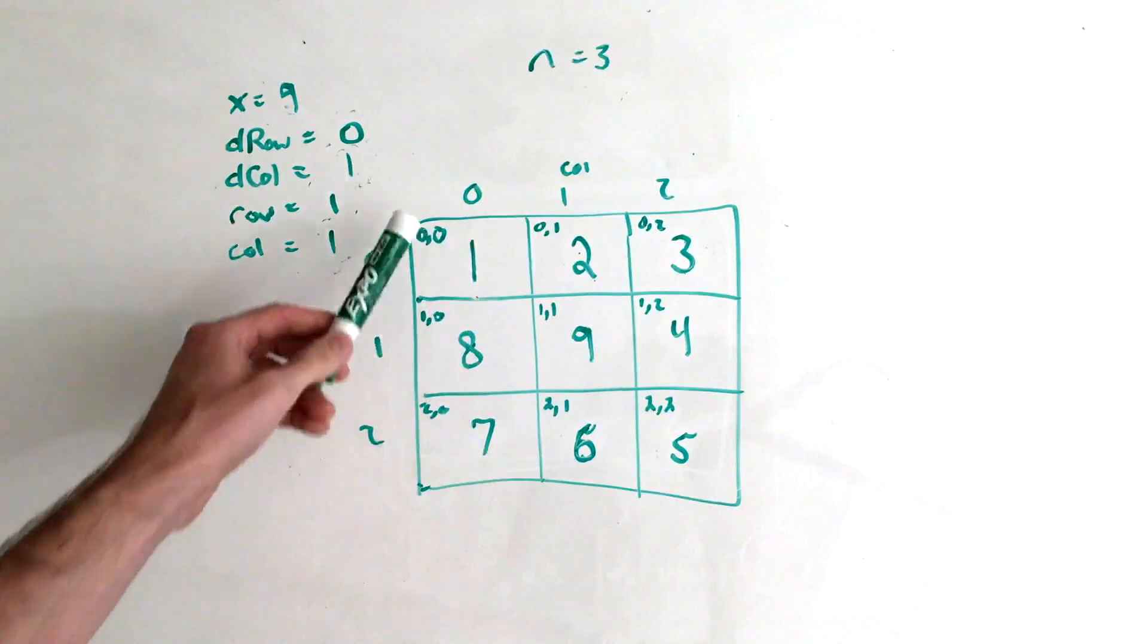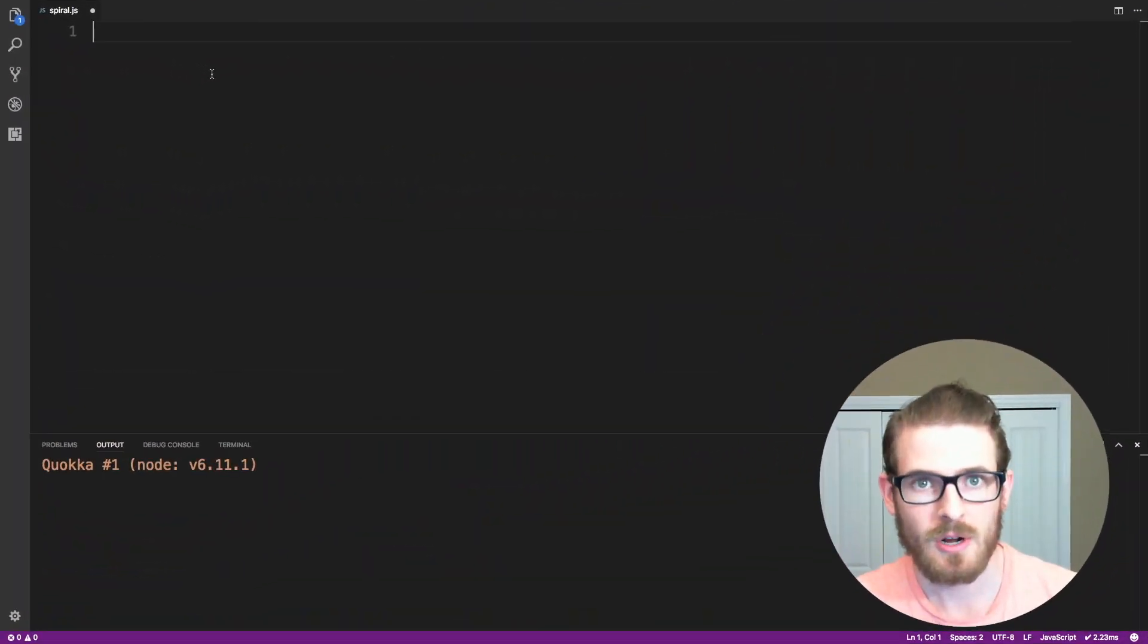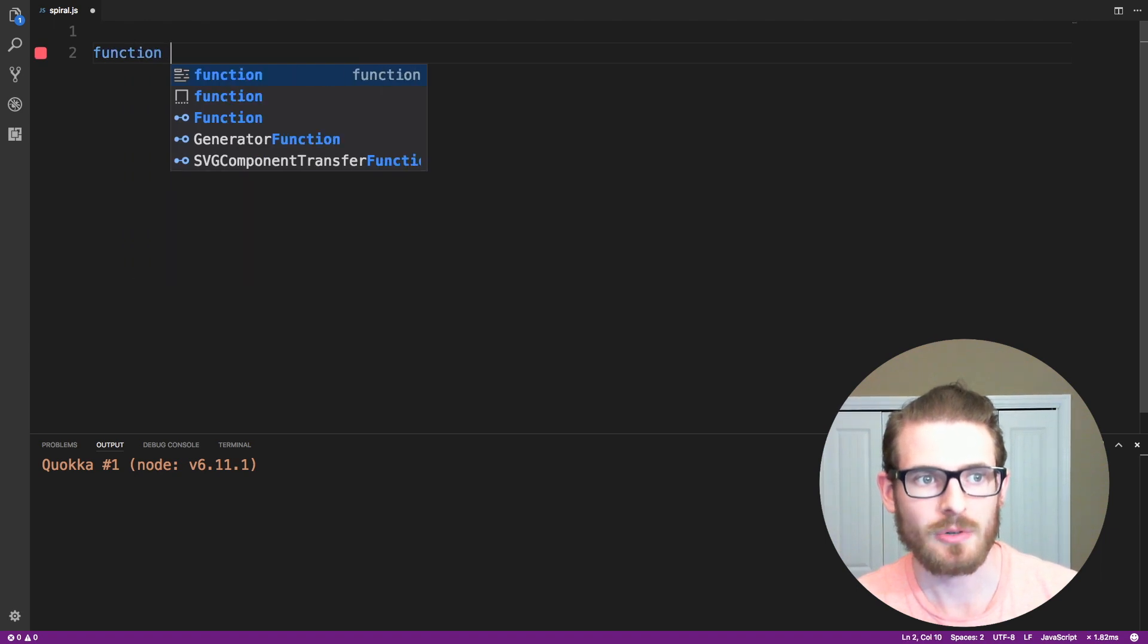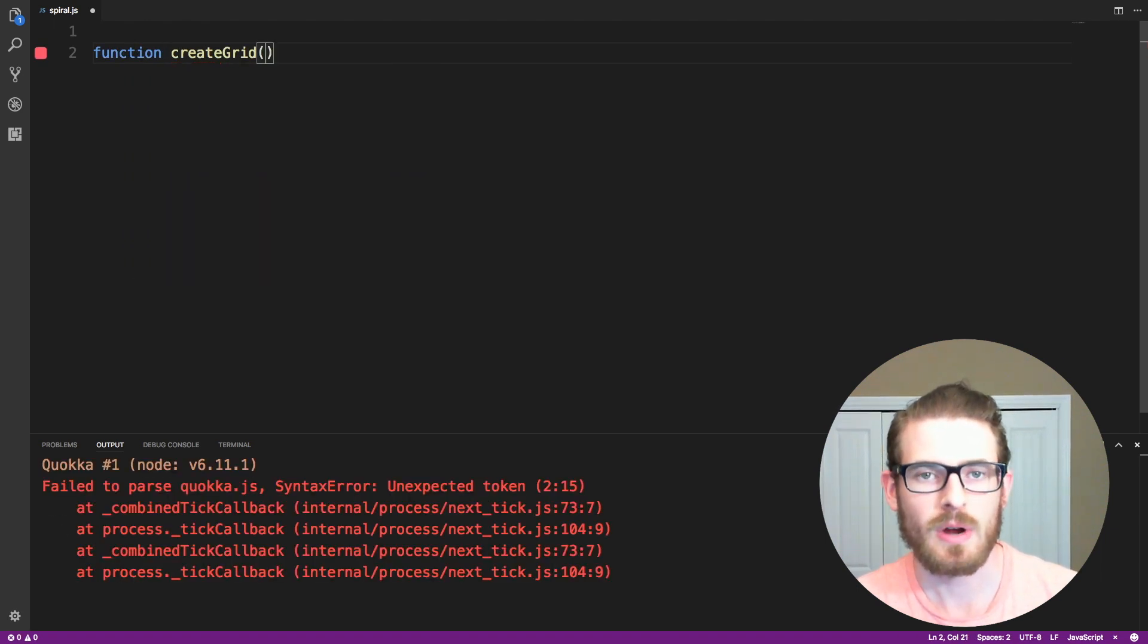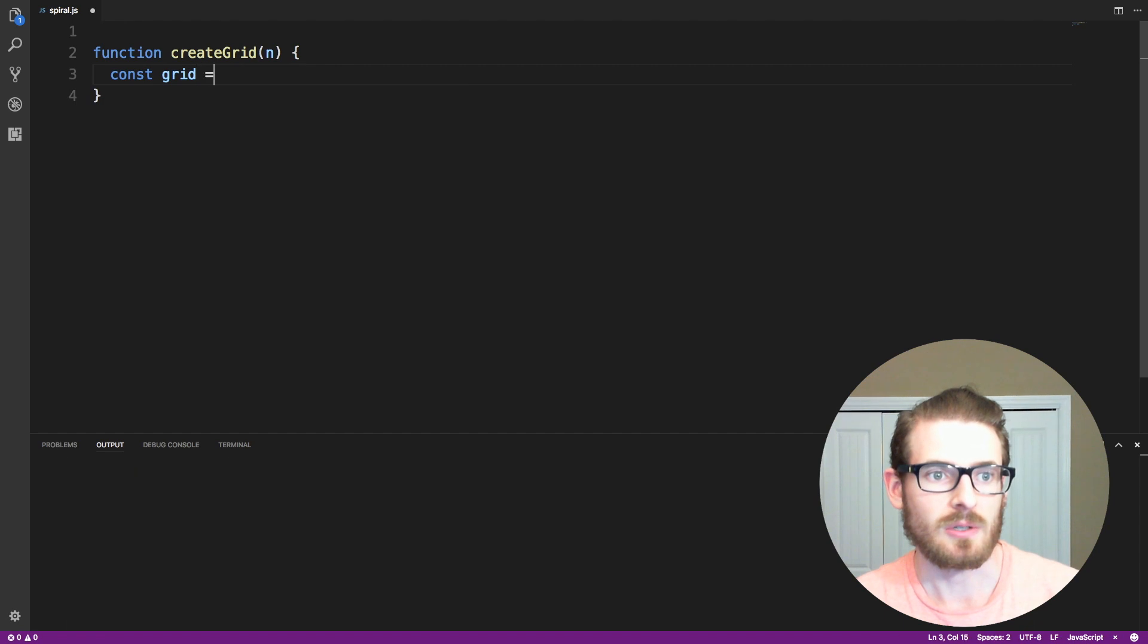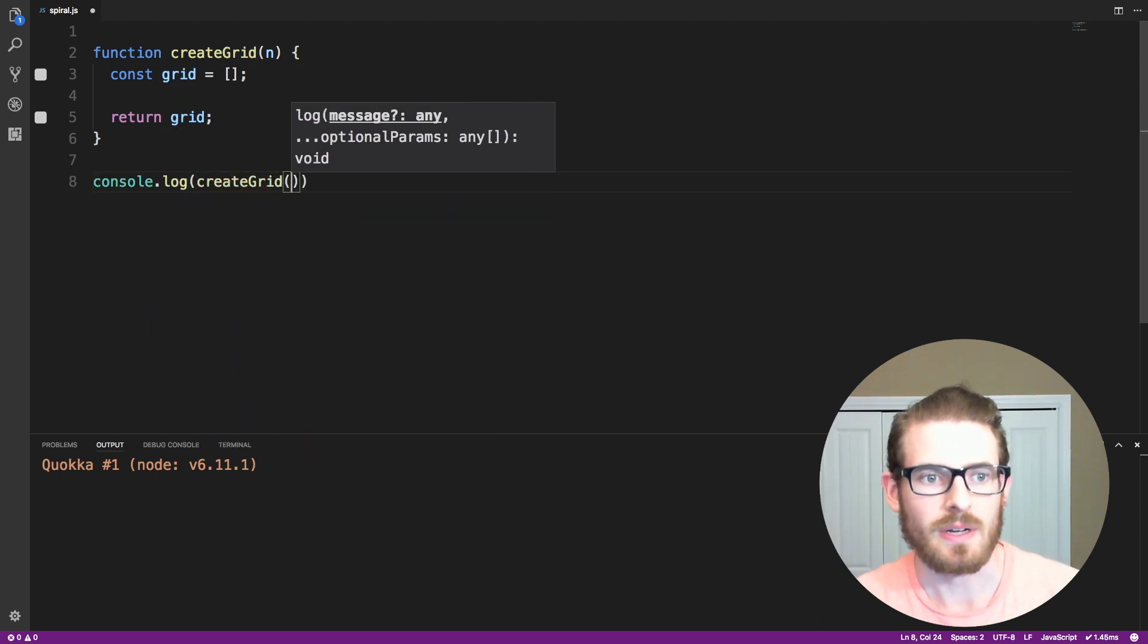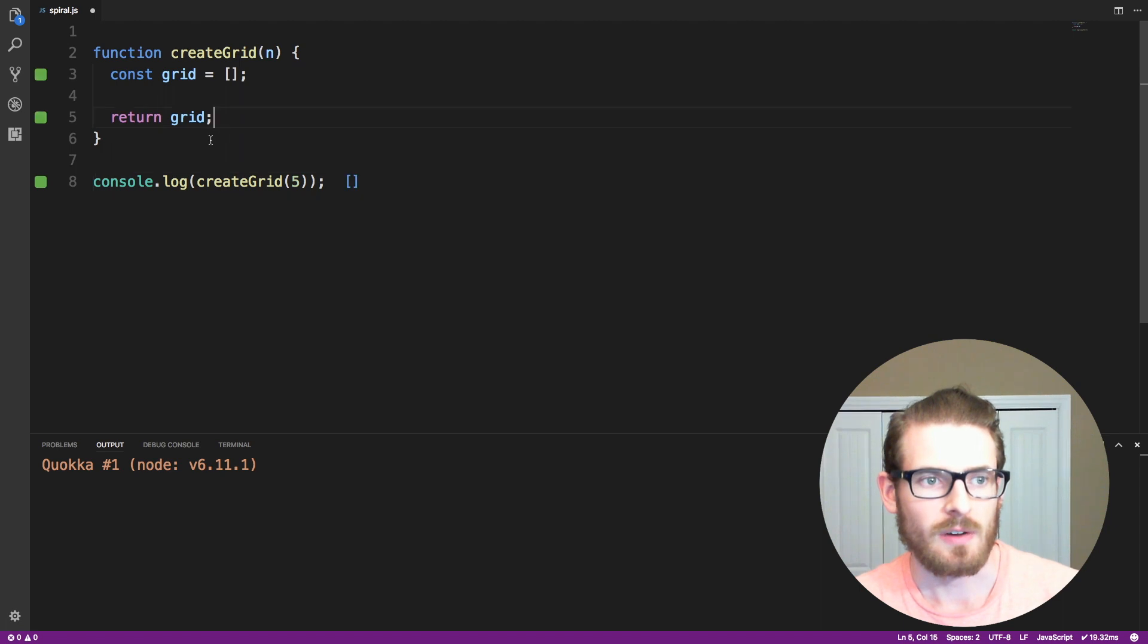All right, so that's the solution on the whiteboard, let's go ahead and implement this in JavaScript. All right, so to start off, let's go ahead and create a function called createGrid, which is going to take one parameter called n, which is going to be how big our n by n ascension grid should be. And I'll go ahead and say const grid is equal to an empty array, and then return that down here. And this will be the array or grid that we're trying to build up. And then down here, I'll go ahead and say console.log createGrid of 5, so we can kind of work towards a solution using n of 5.